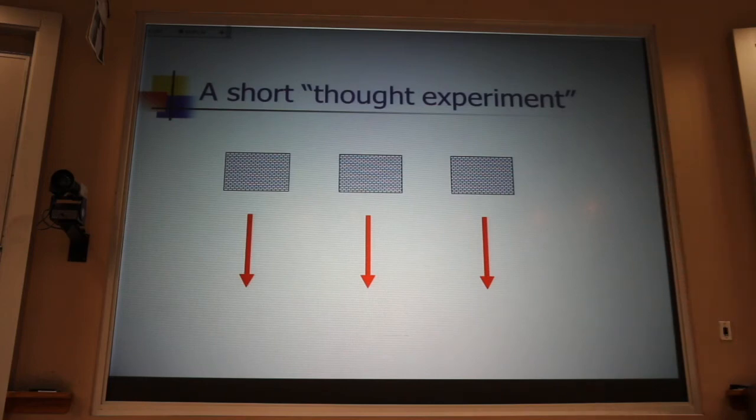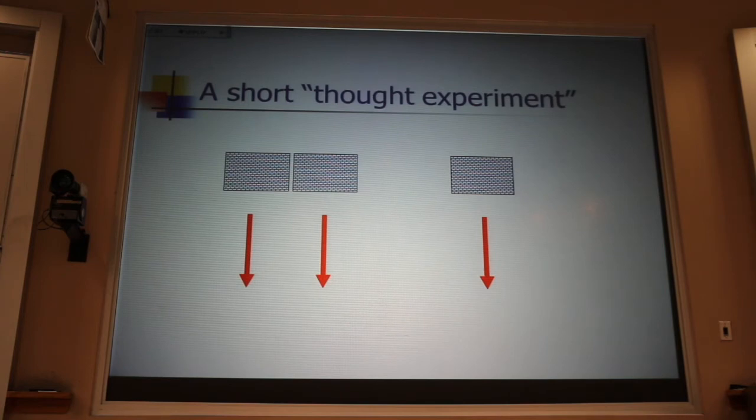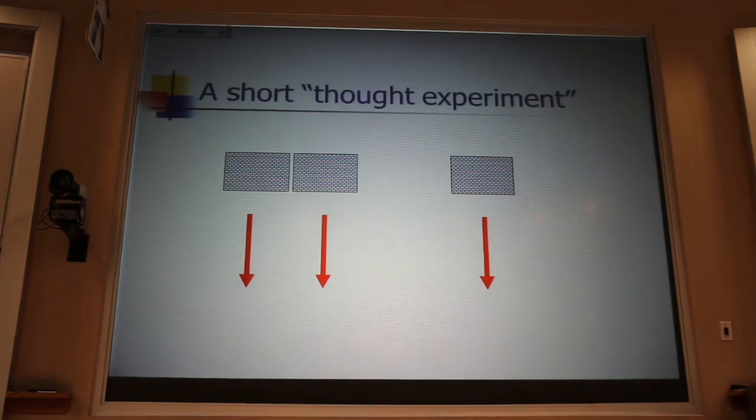He then argued that if they're all going at the same speed at the same time, putting two of them next to each other wouldn't change anything. They'd all still land at the same time.